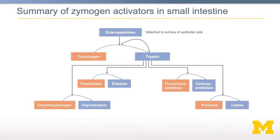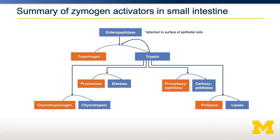Most proteases used to digest proteins are themselves zymogens. Shown here are several zymogens: trypsinogen, pro-elastase, chymotrypsinogen, pro-carboxypeptidase, and pro-lipase. Each of these is activated by a different process into its active form, shown in blue. The active form is the part that goes on and continues with digestion. We need to control the activation of these enzymes so they are active only when needed and not inappropriately, where they could break themselves down.